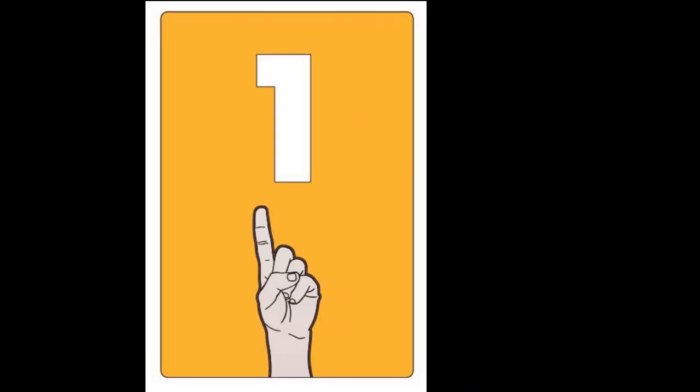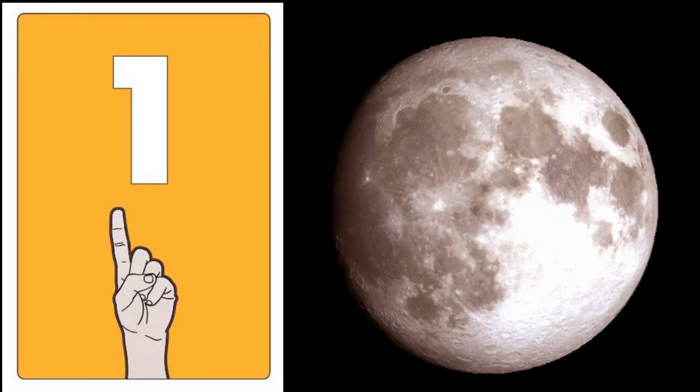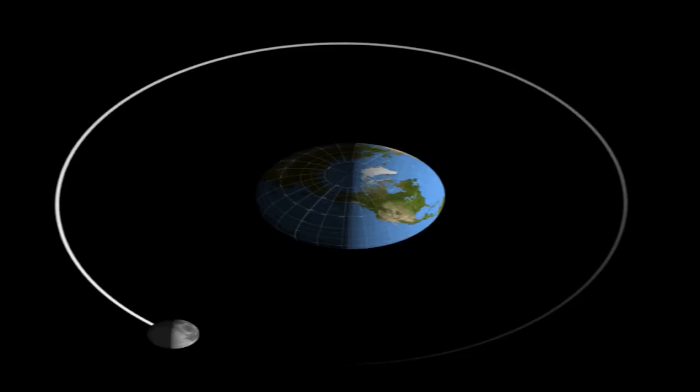1. The number of moons for Earth is 1. Our Earth has only one moon.